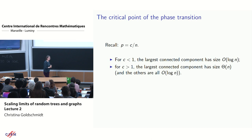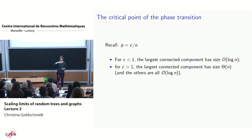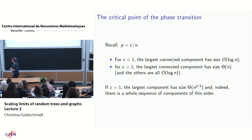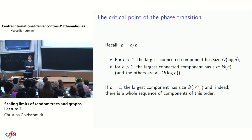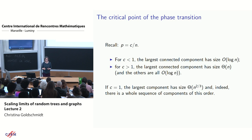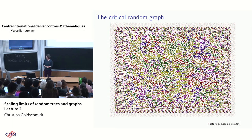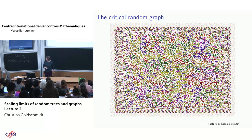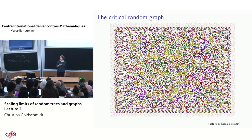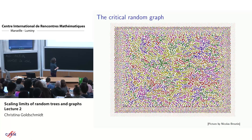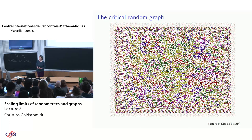At c = 1 the largest component has size on the order of n^{2/3}, and it is not unique — there is a whole collection of components of that order. This is Nicolas Broutin's critical random graph carpet: all components of the critical random graph, displayed by color. Our aim is to understand this picture — these different components in a metric space sense.